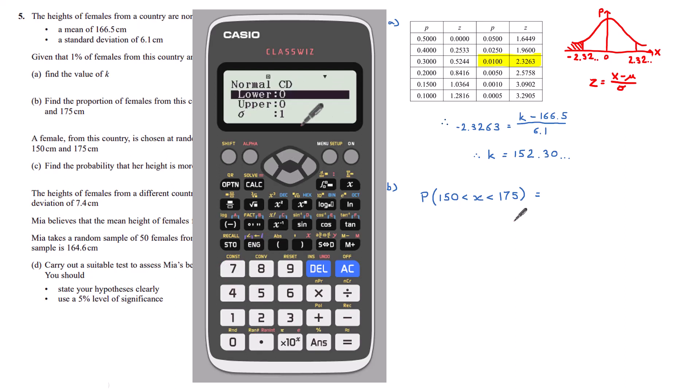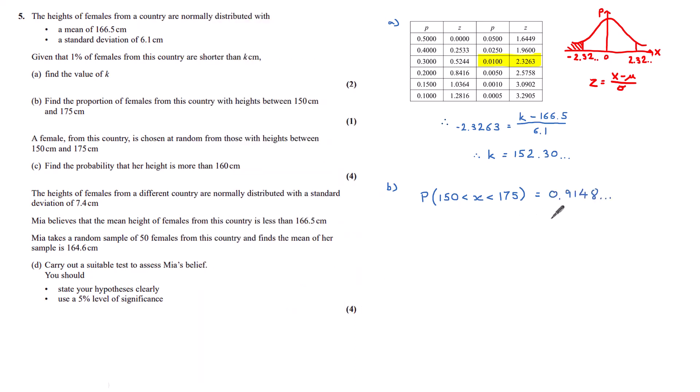My lower bound, I'm looking between 150 and my upper bound of 175. My standard deviation is 6.1 and my mean is 166.5, which gives me an answer of 0.9148 and so on.